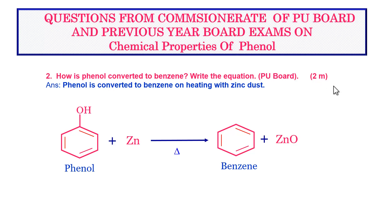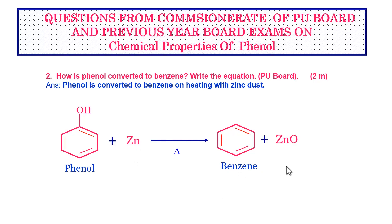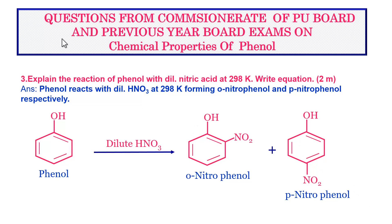Next question: how is phenol converted to benzene? Write the equation. This is a question for two marks. This is a reaction of phenol with zinc dust, where phenol when heated with zinc dust is converted to benzene. The equation is: C6H5OH + Zn → (on heating) benzene C6H6 along with the formation of zinc oxide ZnO.